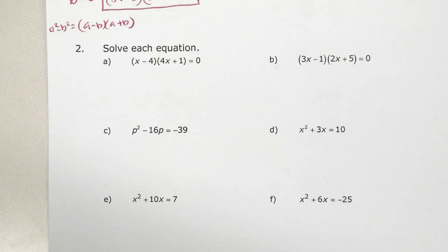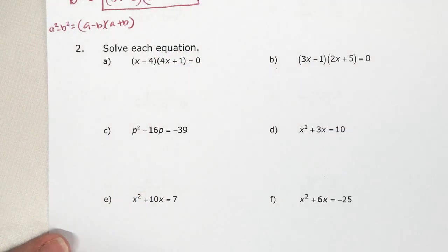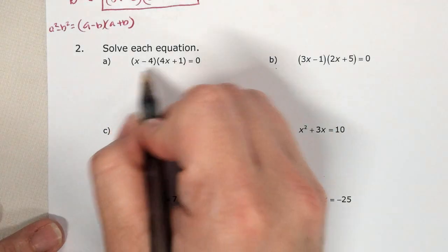Okay, we're on to number two. We're solving equations. Well, the nice thing is number two, a and b, we're factoring, but they were already factored for us. So zero factor property means I can separate and solve.